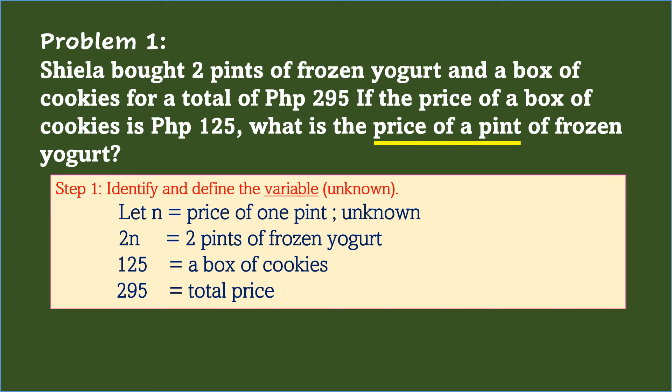With this unknown, let n be the price of one pint. Other given numbers are the two pints of frozen yogurt, represented by 2n, since the price of one pint is still unknown. 125 pesos is the price of a box of cookies, and 295 pesos is the total price.